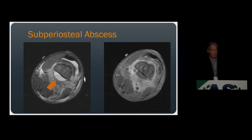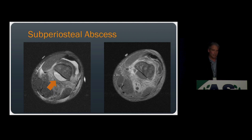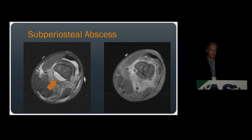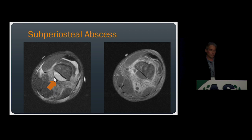While discussing hematogenous osteomyelitis, I'd like to talk about abscesses, since they are commonly seen in this setting. There are two types. The first is a subperiosteal abscess, seen almost exclusively in children, typically in the metaphyses of long bones. It looks like a fluid collection intimately associated with the cortical bone, and you can usually appreciate the overlying periosteum. It's important to identify a subperiosteal abscess because it requires more urgent surgical treatment than a typical soft tissue abscess owing to its subperiosteal location.